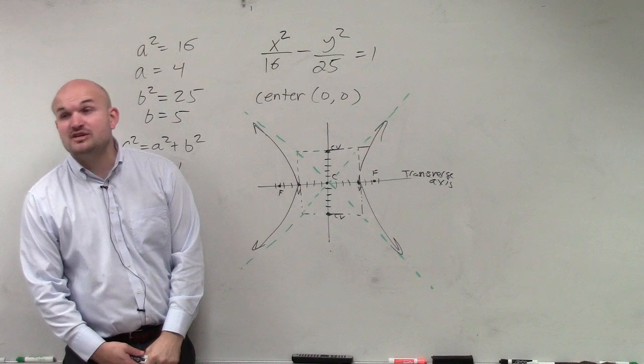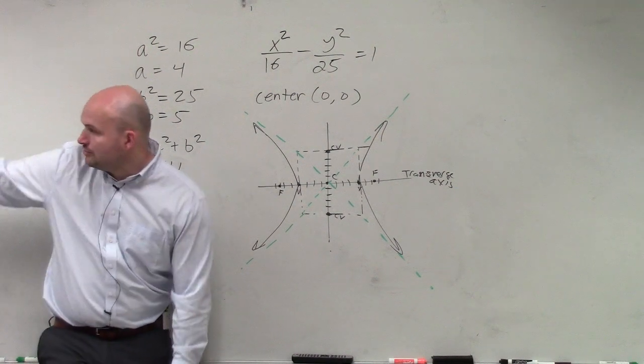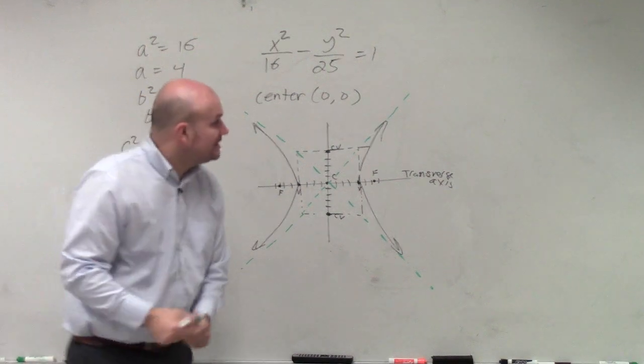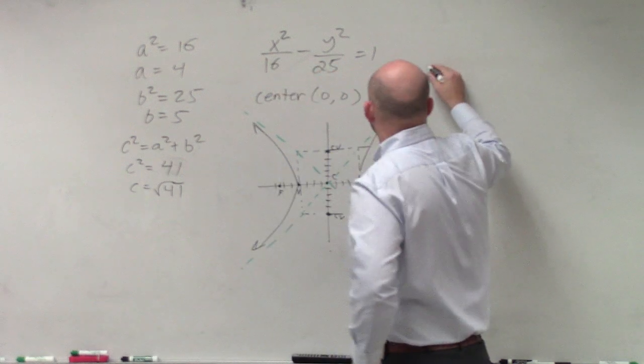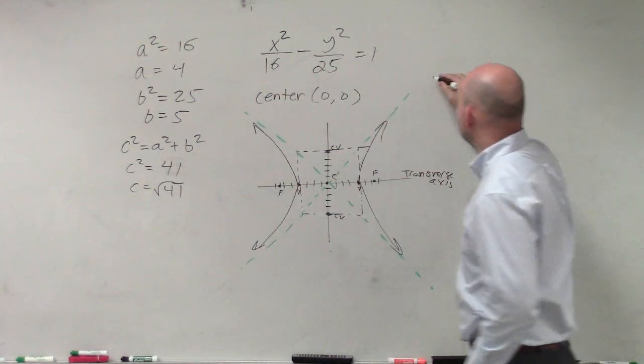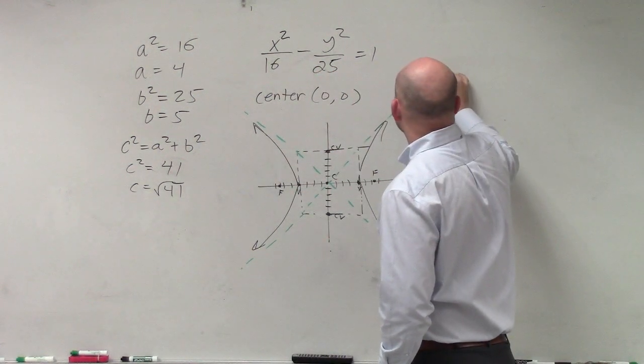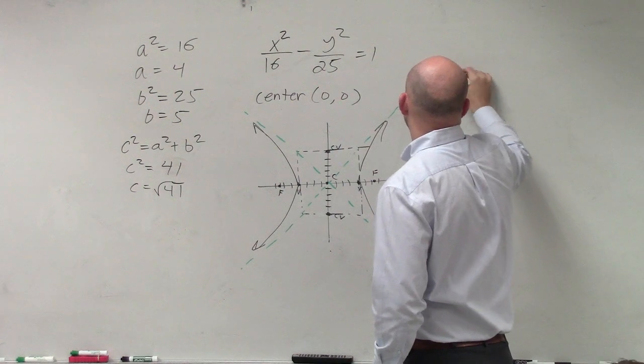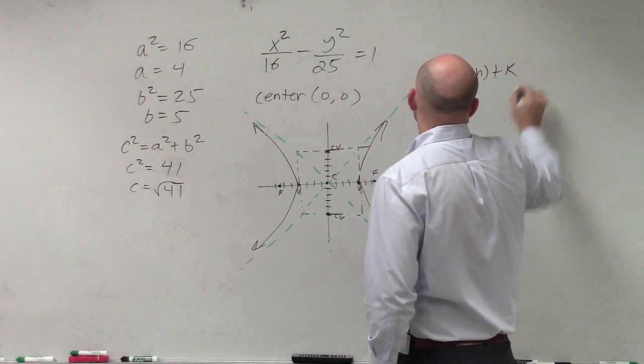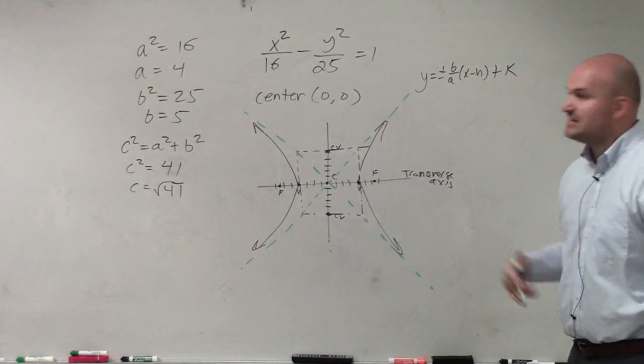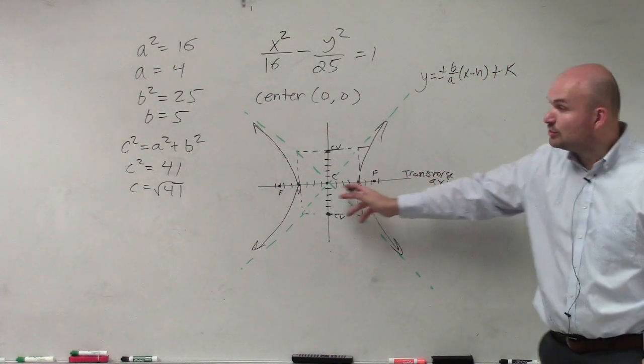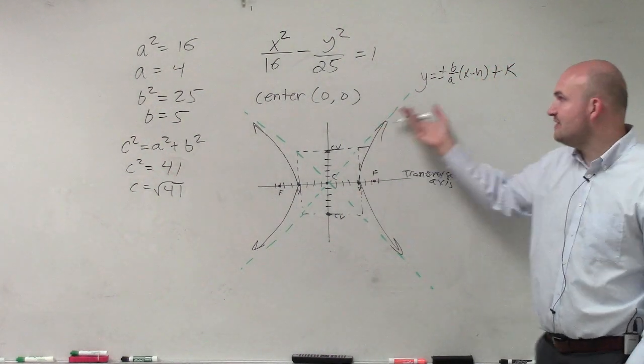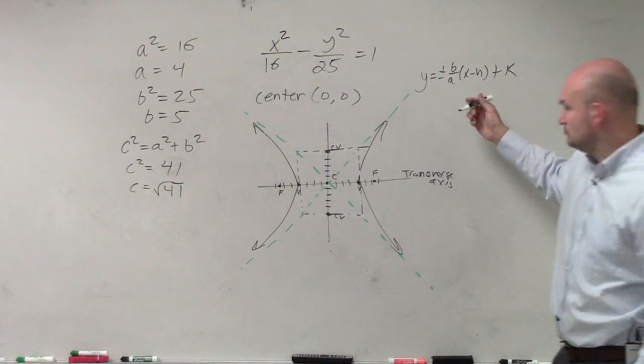Now, the last thing is identifying the equation of the hyperbola. So we've got to know these formulas. So the equation of a line is, for a horizontal ellipse, is y equals plus or minus b over a times x minus h plus k. That's the equation of your asymptote. That's the equation of these. And guys, do we have all this information we need? Yes, we do.